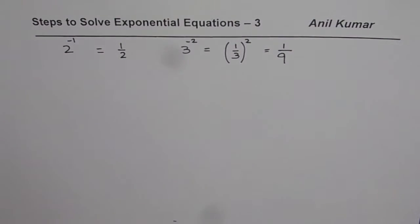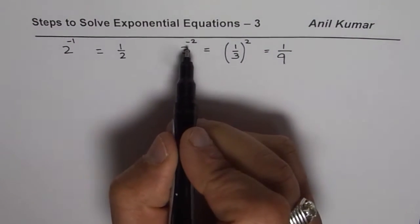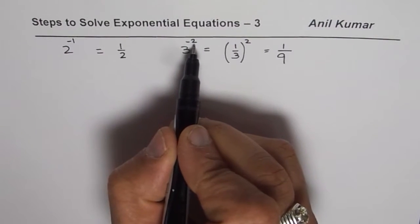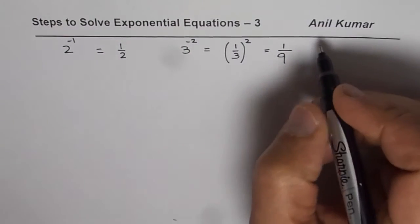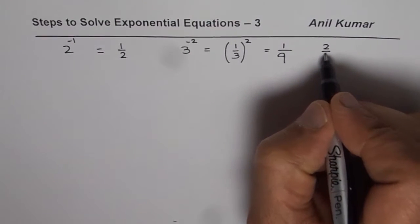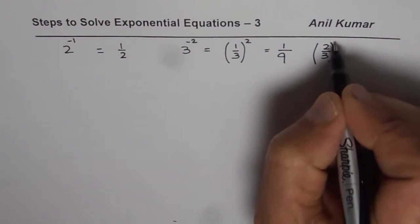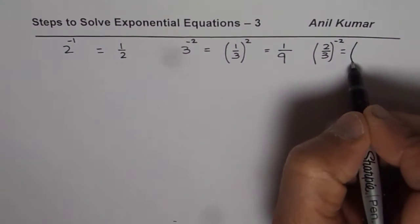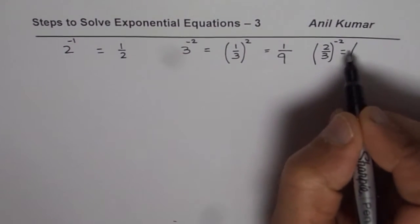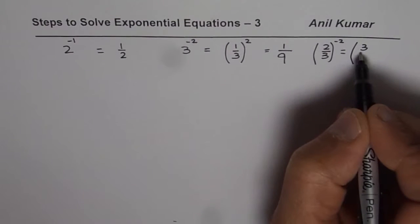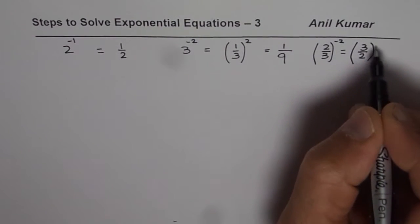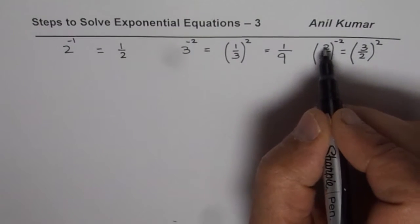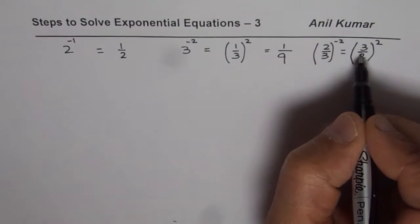So that is how we work with negative exponents. So these are the integer numbers. If I have 2 over 3 to the power of minus 2, it really means, first you do reciprocal of the number, it means 3 over 2 to the power of 2. So that negative exponent makes the number as its reciprocal.